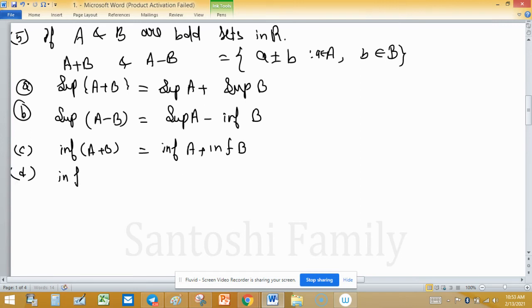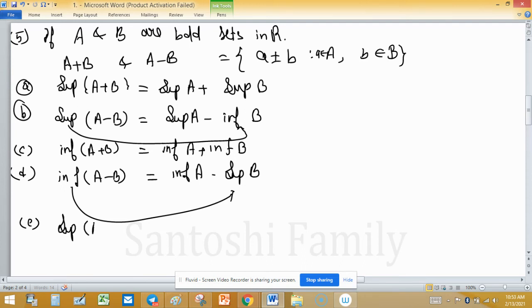Infimum of A minus B equals infimum of A minus supremum of B. E: supremum of A union B will be max of supremum of A and supremum of B.